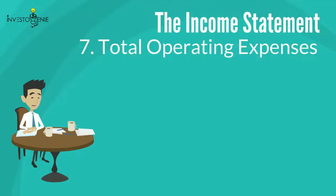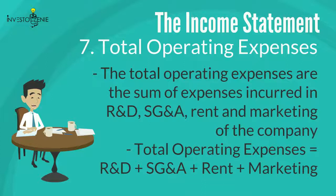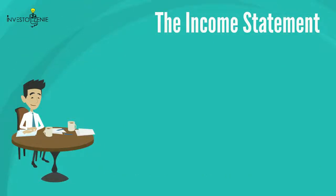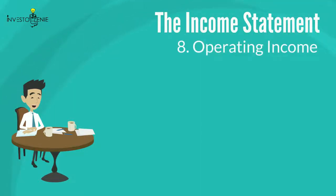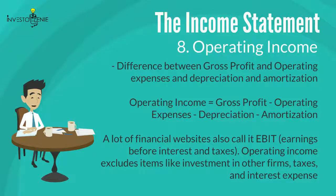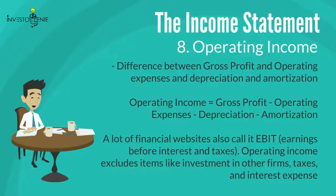Seven: total operating expenses are the sum of expenses incurred in R&D, SG&A, rent, and marketing of the company. Eight: operating income, also referred to as operating profit, is the difference between gross profit and operating expenses and depreciation and amortization. Many financial websites also call it EBIT — earnings before interest and taxes. Operating income excludes items like investment in other firms, taxes, and interest expense.